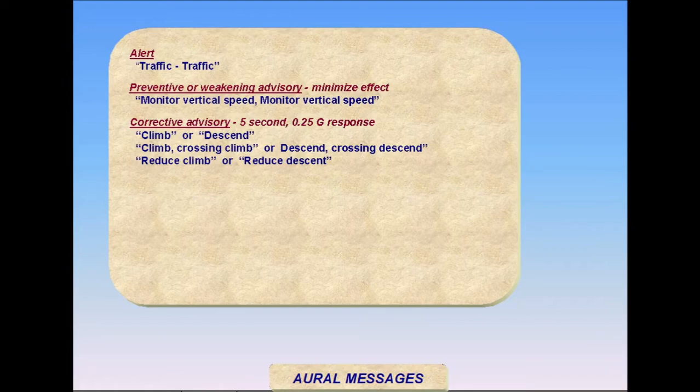Set vertical speed to that shown in green on the VSI tape and avoid the red prohibited area. You will cross the threat aircraft's altitude. Reduce climb, reduce climb, or reduce descent, reduce descent. Reduce vertical rate to the minimum necessary to avoid the red prohibited area.